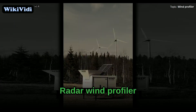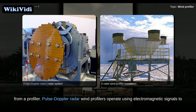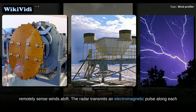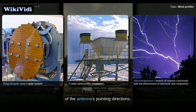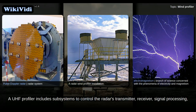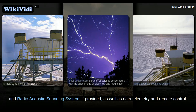Radar wind profiler. Pulse Doppler radar wind profilers operate using electromagnetic signals to remotely sense winds aloft. The radar transmits an electromagnetic pulse along each of the antenna's pointing directions. A UHF profiler includes subsystems to control the radar's transmitter, receiver, signal processing, and radio-acoustic sounding system, if provided.